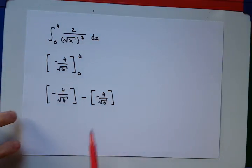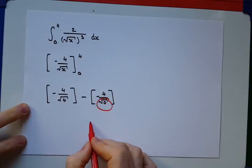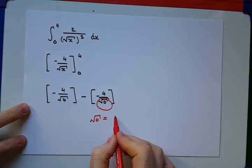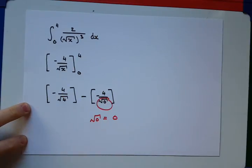And here is when the alarm bells should start ringing, because the square root of 0 is equal to 0, and we cannot divide mathematically by 0.